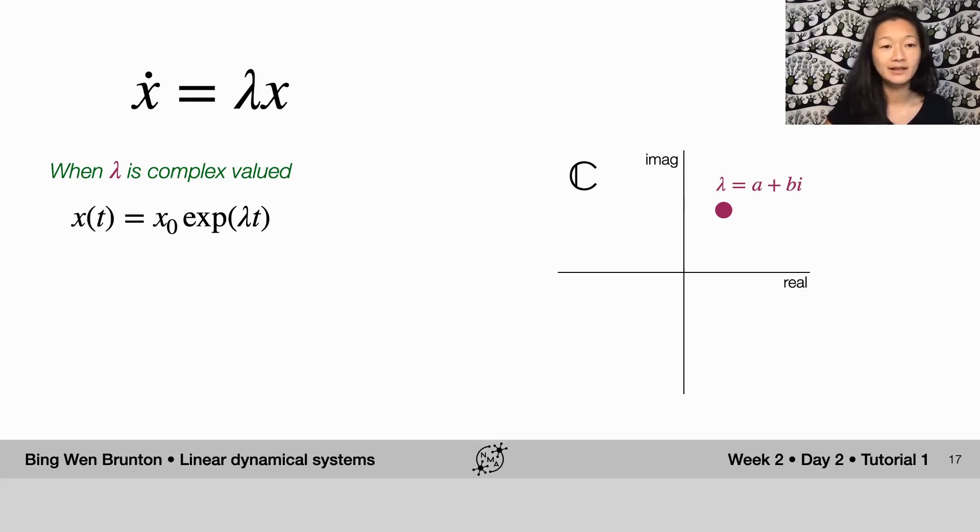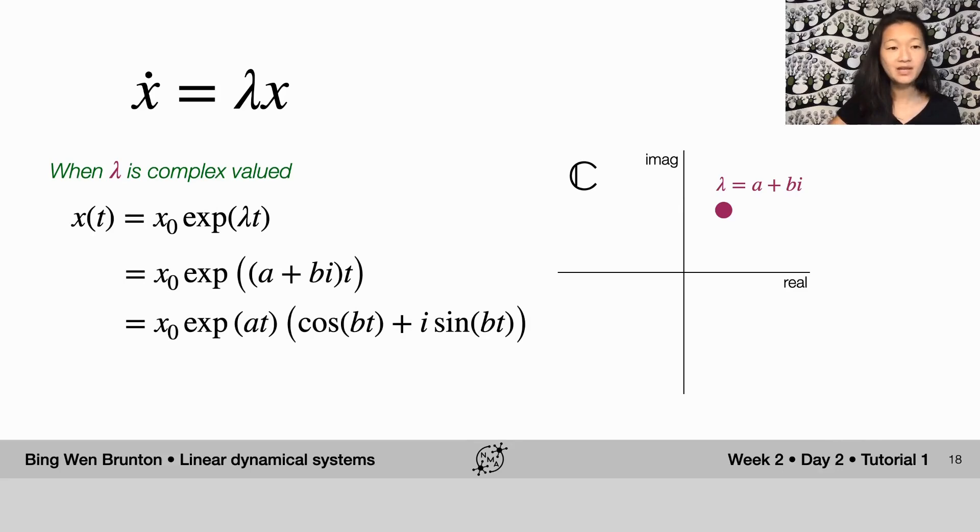Let's see what happens if we plug this number into the equation and plug it into the solution for x of t. We can just plug it in where a and b are real valued numbers and we can pop out the real component by seeing that it separates out as e to the at plus a bunch of cosines and sines as a function of t that only has a b component in it.